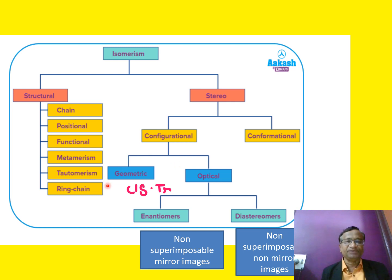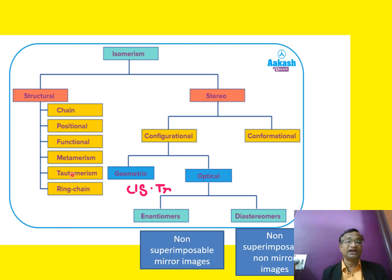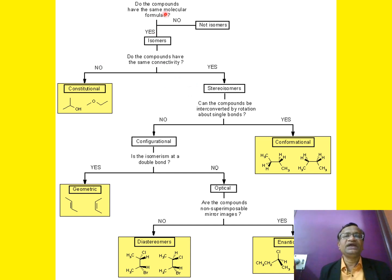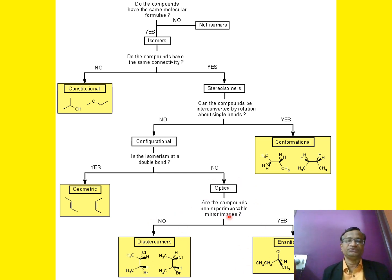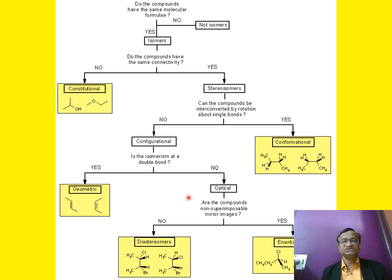There are also conformational isomers. Cis-trans is a type of geometric isomerism. Optical isomers are non-superimposable mirror images — enantiomers with dextro and levo forms. Looking at the full classification: if compounds have the same molecular formula, they are isomers; if connectivity differs, they are constitutional isomers; if connectivity is the same but spatial arrangement differs, they are stereoisomers — subdivided into configurational and conformational; configurational is further divided into geometric (cis-trans) and optical; optical includes diastereomers and enantiomers. Optical means dextro/levo; geometric means cis-trans.